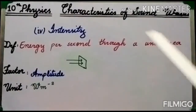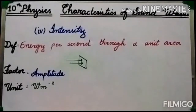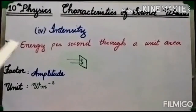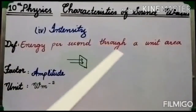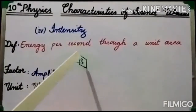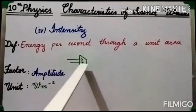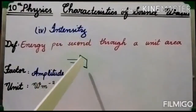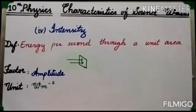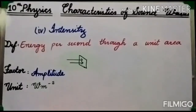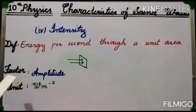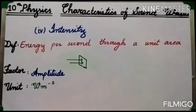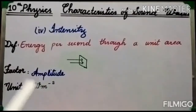The last characteristic of sound waves is intensity. By definition, intensity is the energy per second flowing through a unit area held perpendicular to the direction of the waves. The factor of the wave that affects intensity is amplitude — more amplitude means more intensity. Since intensity is a physical quantity that can be measured accurately, its unit is watt per meter squared.